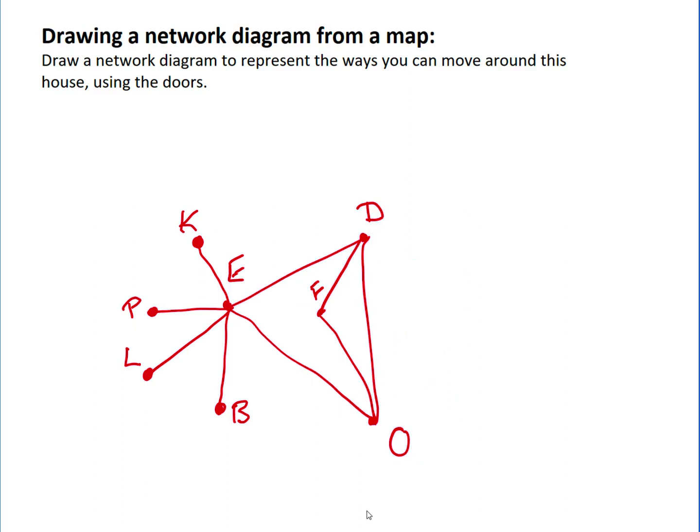And that is a network diagram that represents the original map, and we can see that the entrance hall, the E, connects through to the kitchen, the pantry, the laundry, the bathroom, and suddenly we've got a simple representation of the original map.